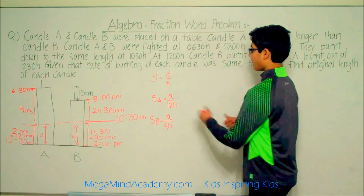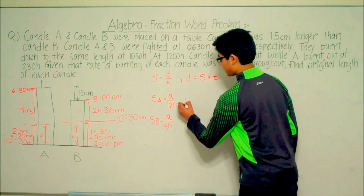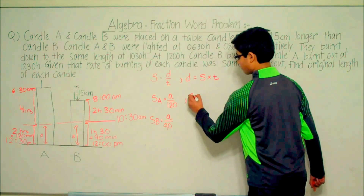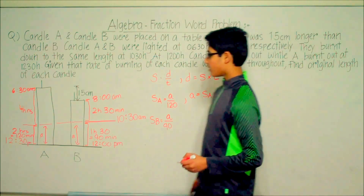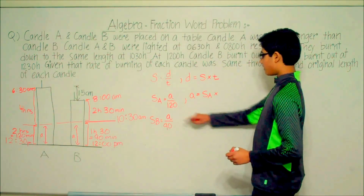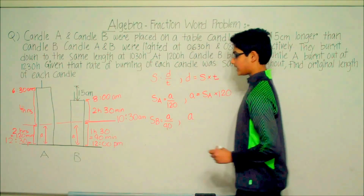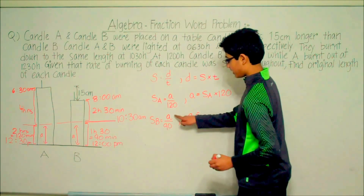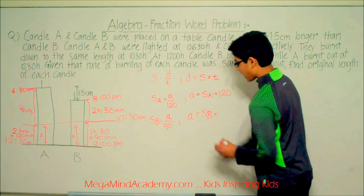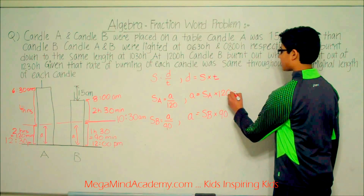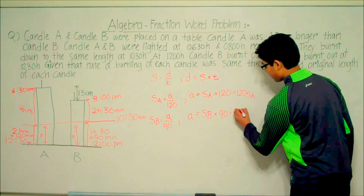We know that distance equals speed times time. So the distance A equals speed SA times 120 minutes for Candle A, and distance A equals speed SB times 90 minutes for Candle B. This gives us 120·SA and 90·SB.